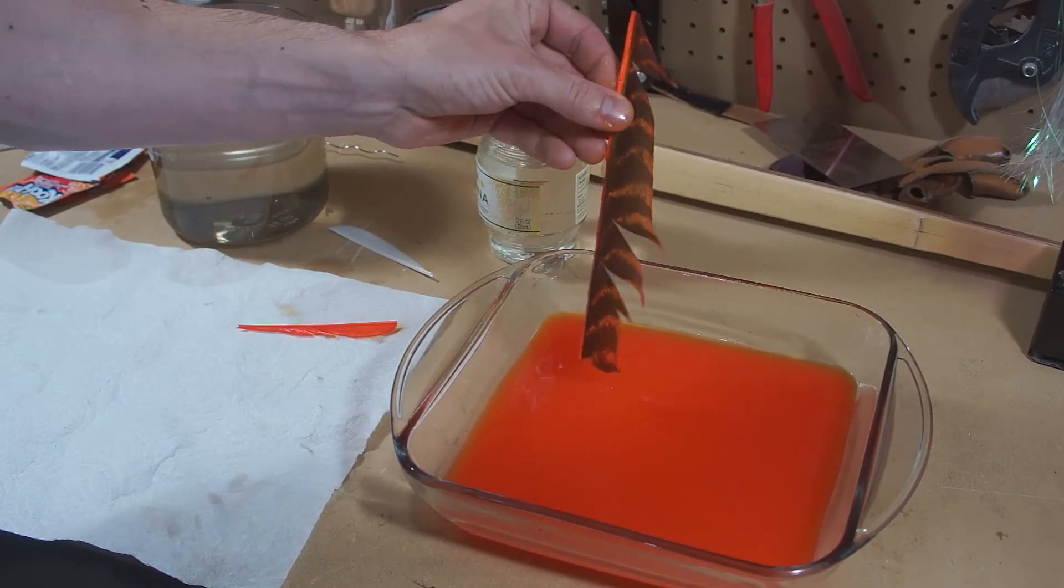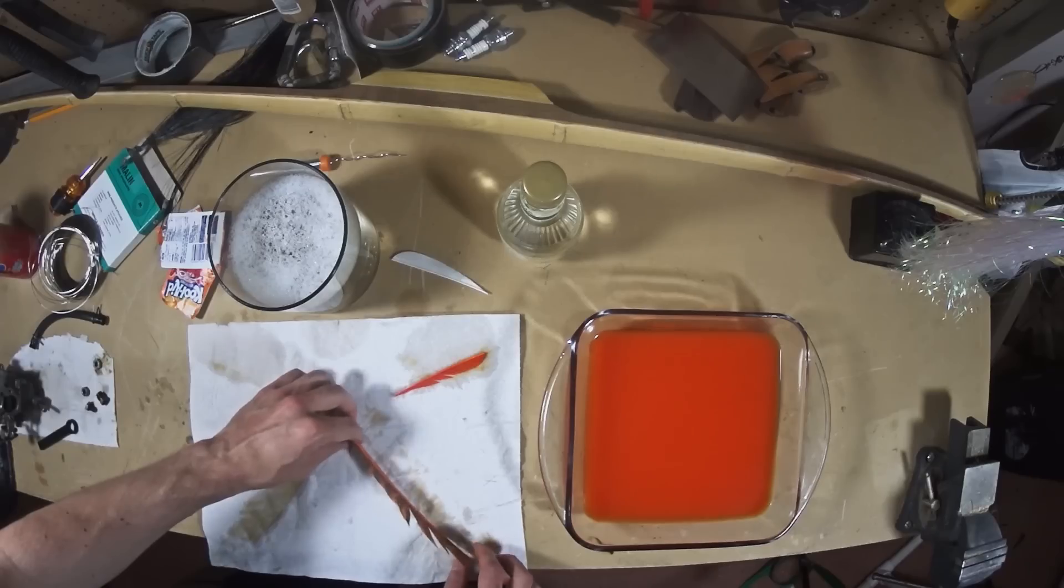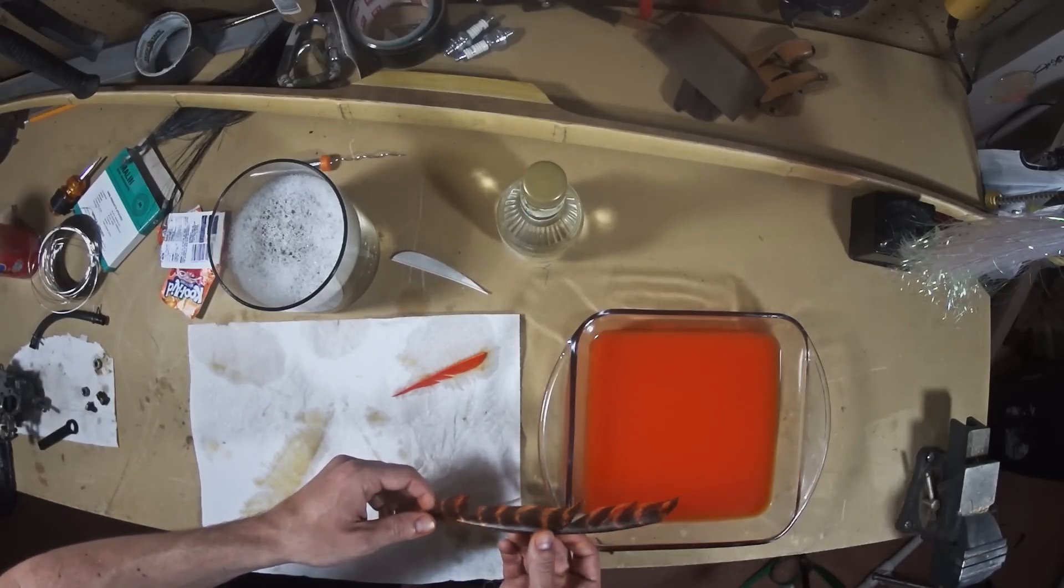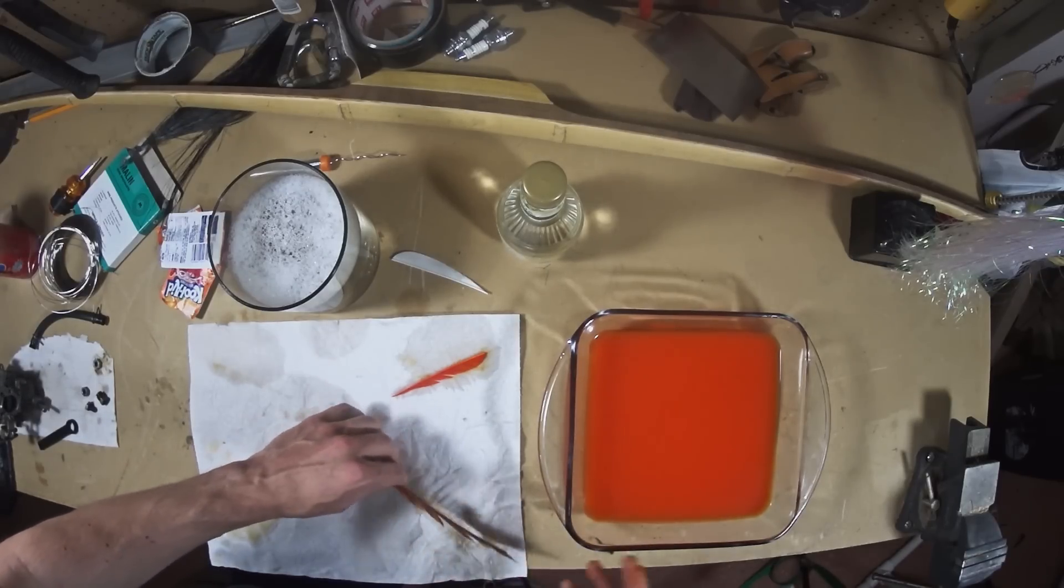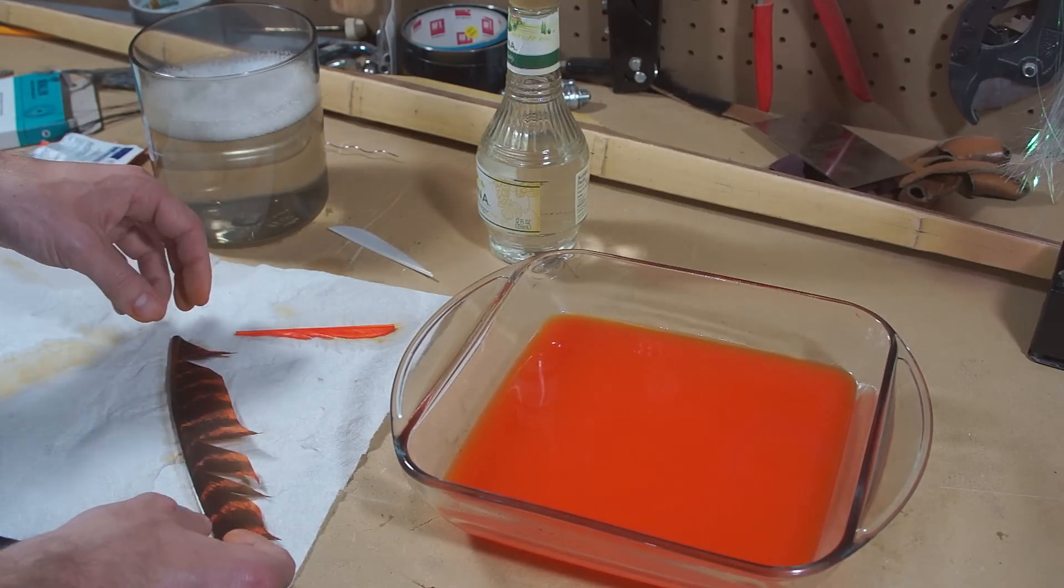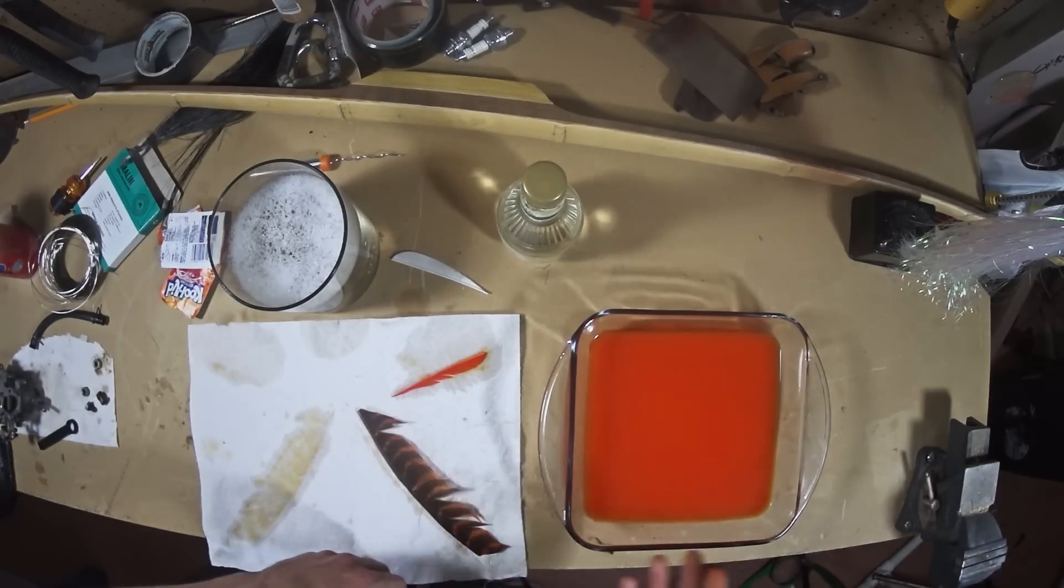Now if you take a look at the feathers and they're not quite as bright as you'd hope they'd be, there's a couple things you can try. One is to add more heat by putting them back in the microwave. The other is to add more reactants, add more Kool-Aid. That'll help push the reaction to the right, as they say in chemistry, and give you more dye on the feathers.